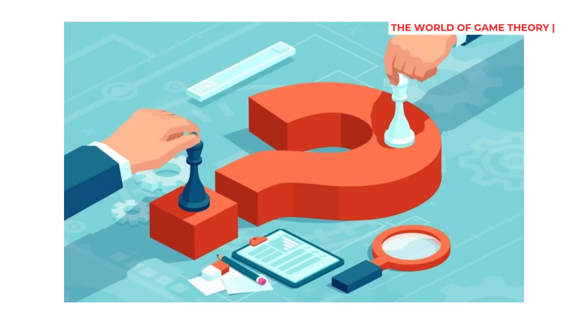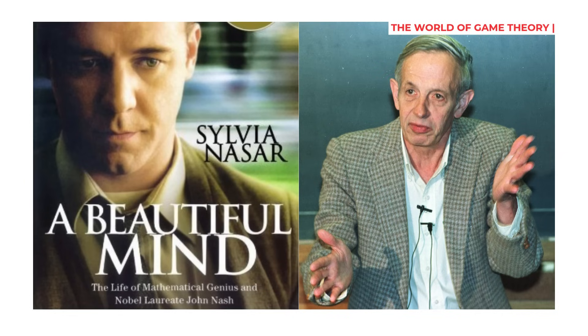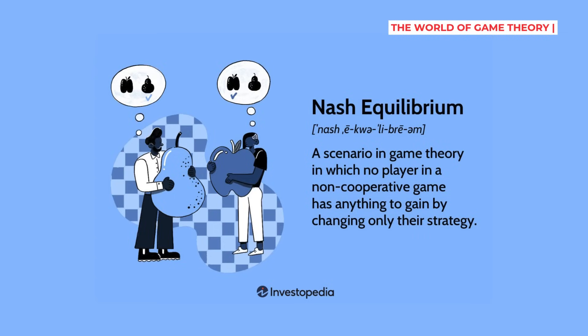Game Theory was built by some incredible minds. John von Neumann, a mathematical genius who could multiply eight-digit numbers in his head, laid the groundwork back in the 1940s. But it was John Nash — the same person from the movie A Beautiful Mind — who truly revolutionized this field while battling severe mental illness. His breakthrough concept, the Nash Equilibrium, changed how we understand human interactions forever.